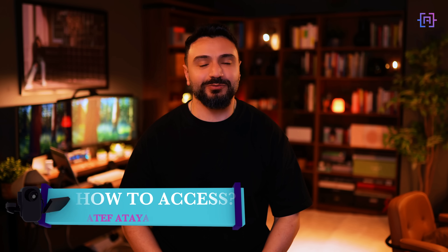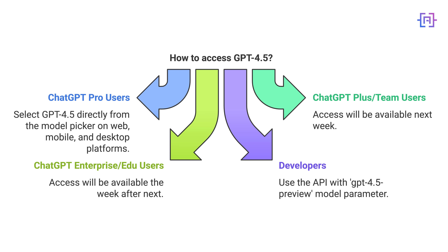If you have decided GPT-4.5 is worth exploring, here is how you can access it. In ChatGPT, Pro users can select GPT-4.5 directly from the model picker on web, mobile, and desktop platforms. Plus and Team users will gain access next week, followed by Enterprise and individual users the week after. For developers, GPT-4.5 is available in the API to all paid tiers through the Chat Completions API, Assistants API, and Batch API. The model supports function calling, structured outputs, streaming, system messages, and vision capabilities. For API implementation, use gpt-4.5-preview as your model parameter. The Batch API offers a 50% discount, and cached inputs are also discounted by 50%, which are useful optimizations for managing the higher cost.